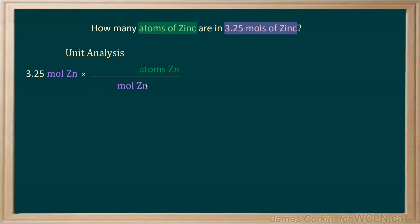In this case, we can convert directly to atoms because we know there are 6.02 times 10 to the 23 atoms for every 1 mole of zinc. This is what Avogadro's number tells us.